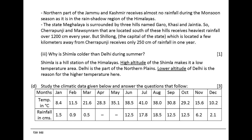Why is Shimla colder than Delhi during summer? Shimla is a hill station of the Himalayas. The high altitude of Shimla makes it a low temperature area. Delhi is part of the northern plains. The lower altitude of Delhi is the reason for the higher temperature there.